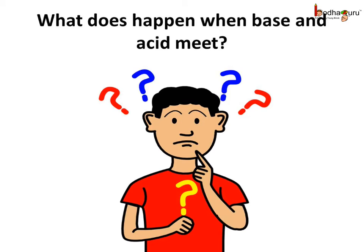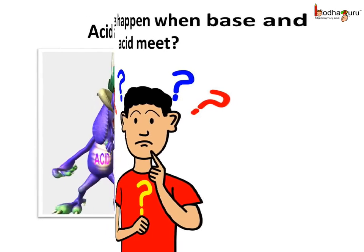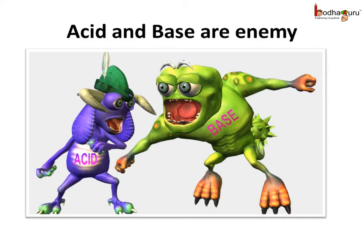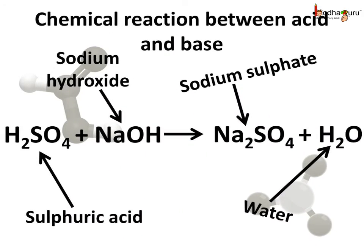But how do base and acid stop each other? What happens when they meet? Acid and base are each other's greatest enemy and so they destroy each other's properties. When acid and base meet, a chemical reaction happens. In the chemical reaction, the atoms within different molecules rearrange and form new molecules. Here, sulphuric acid meets with sodium hydroxide, which is a base, and the atoms rearrange to form newer substances: sodium sulphate and water.